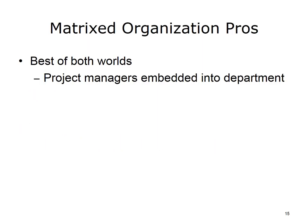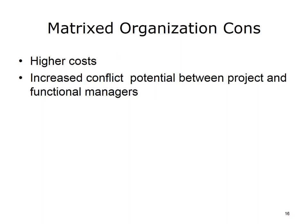The positive aspects of a matrixed organization include having the best of both worlds. Since project managers are embedded within a department, they tend to get more in-depth experience, whereas if they were on loan to that department, they may be coming into a project blindly. The negative aspects are higher costs because of duplication between the functional and project managers. Likewise, there is a possibility for more conflict between project and functional managers because of authority issues.